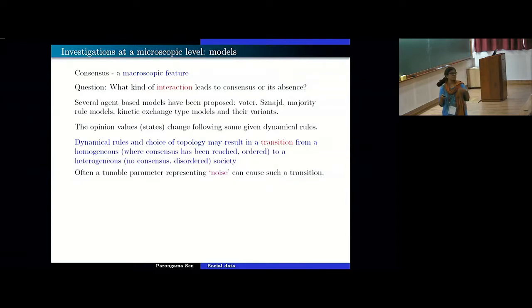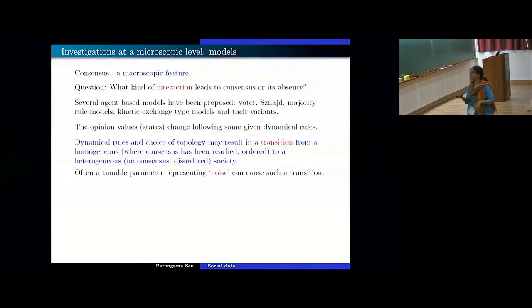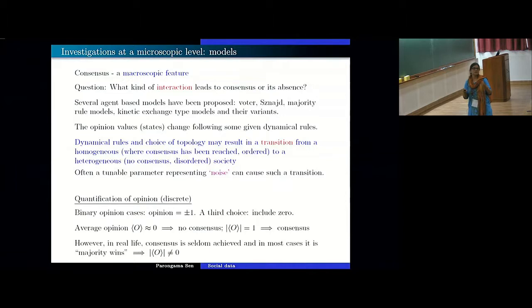So this parameter which induces this so-called transition can be thought of as a noise. So as I told you the important thing when I form a model is how do I quantify the opinions. So for this particular talk I will be restricting on discrete opinions only. So it can be said suppose you have two options to decide then I can assign the plus minus one values. If you have a third you can include zero and so on. One interesting quantity is the average opinion. If it is zero or very close to zero that corresponds to the disordered state. And if the average opinion is equal to one that is perfect consensus which is very rare. So usually whenever this average quantity, and we take the absolute value, is non-zero we say that it is an ordered state.